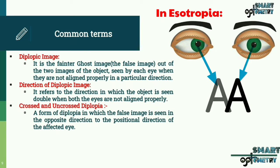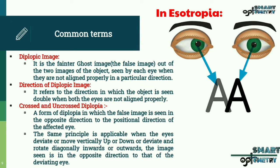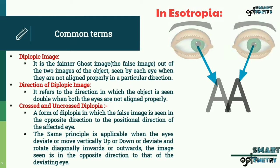The same principle is applicable when the eyes deviate or move vertically up or down, or deviate and rotate diagonally inwards or outwards — the image is seen in the opposite direction to that of the deviating eye.